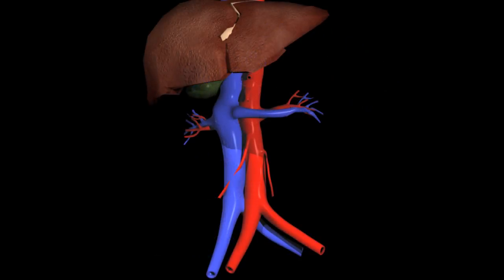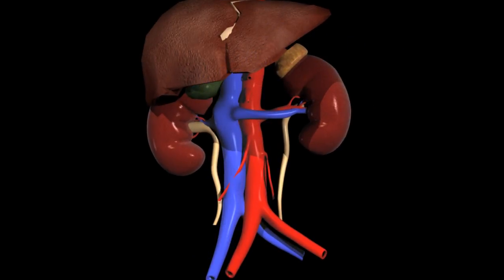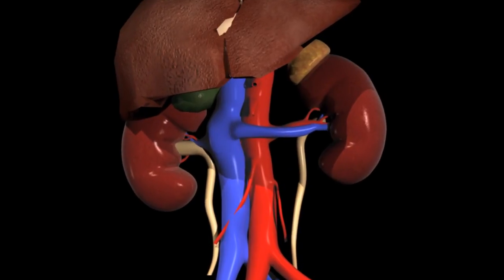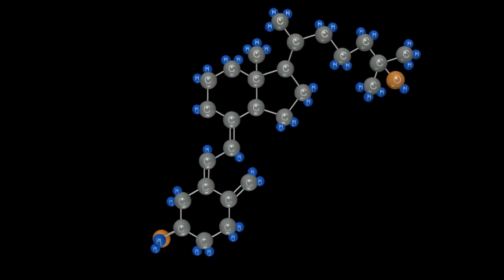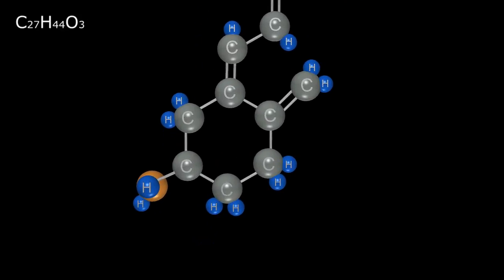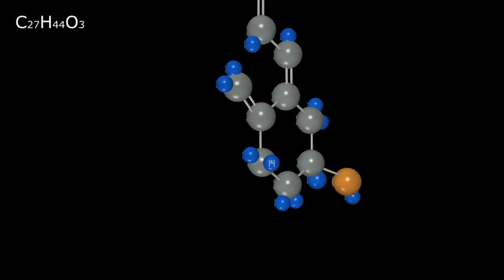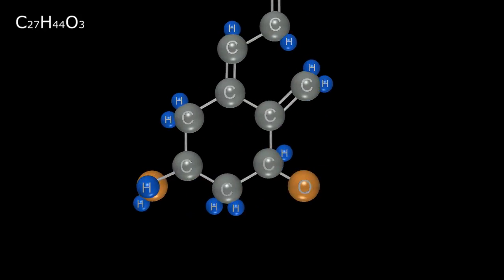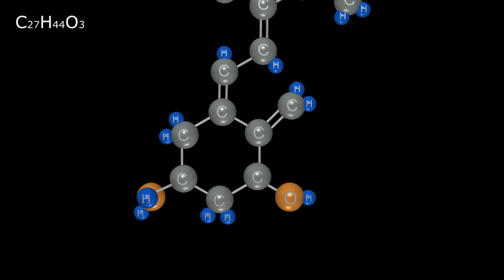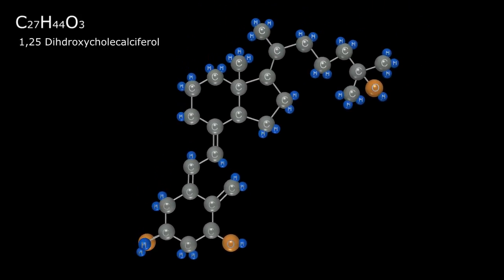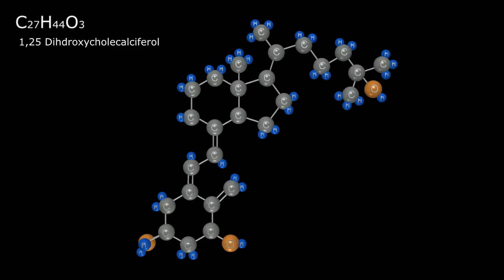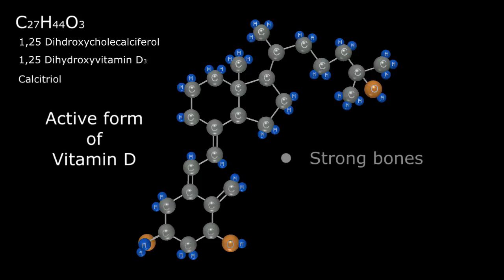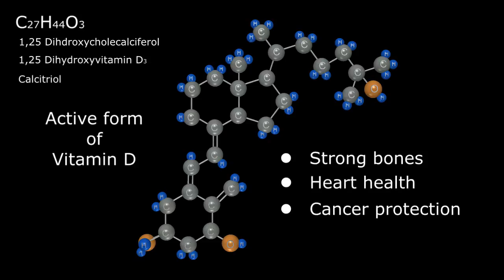The new molecule is again transported via the bloodstream to the kidneys where it undergoes a second hydroxylation, adding another oxygen atom to the first carbon and changing the chemical formula to C27H44O3. The new molecule also has multiple names including 1,25-dihydroxycholecalciferol, 1,25-dihydroxyvitamin D3, or simply calcitriol. This is the active form of vitamin D that facilitates strong bones, heart health, and protection from certain forms of cancer.